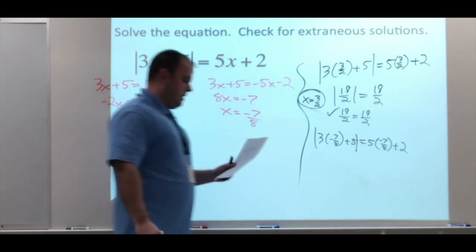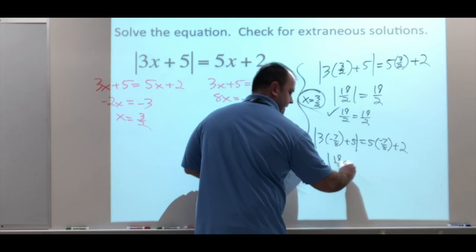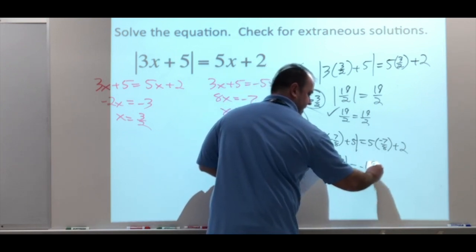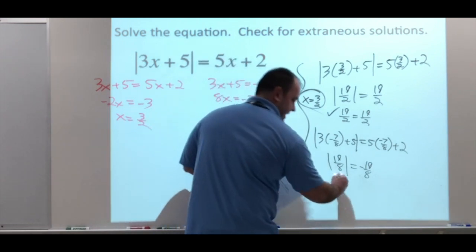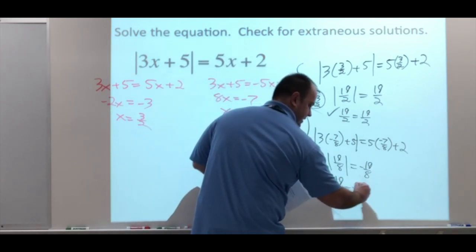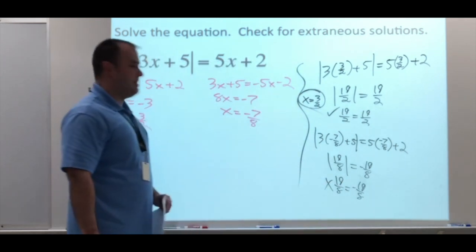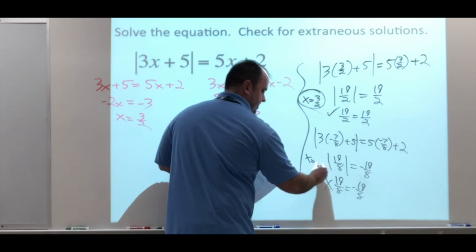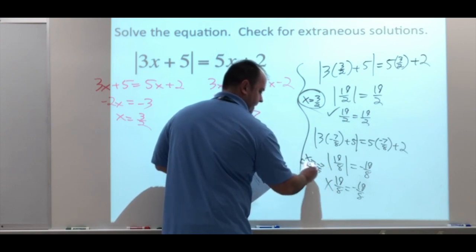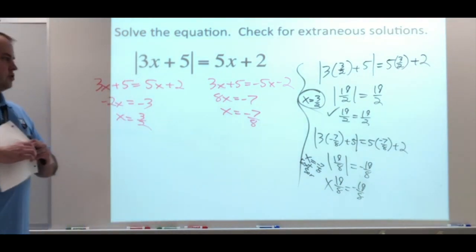Going back to the negative 7 over 8. There we have it set up, and you should get absolute value of 19 over 8 equals negative 19 over 8. So right there we should know this isn't going to work out. Absolute value of 19 over 8, negative 19 over 8. This is not true. So that means negative 7 over 8, extraneous solution.